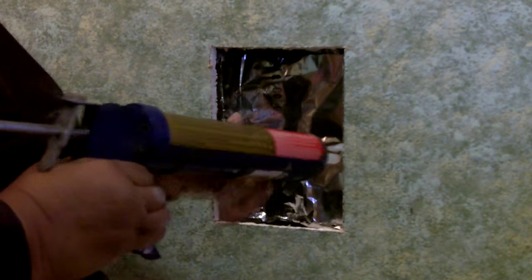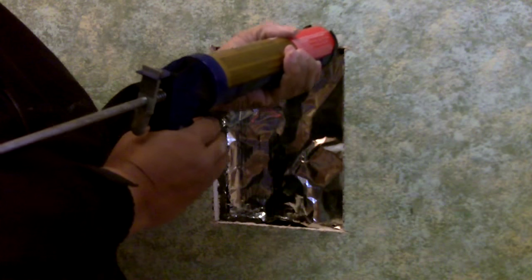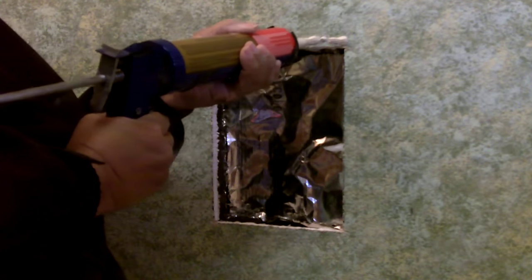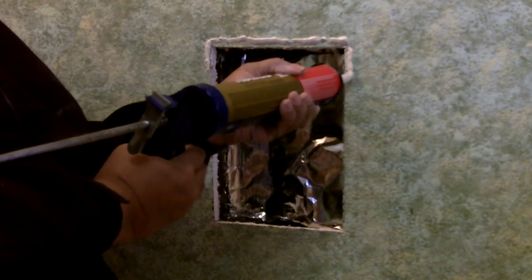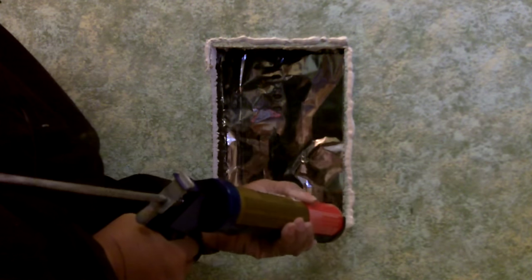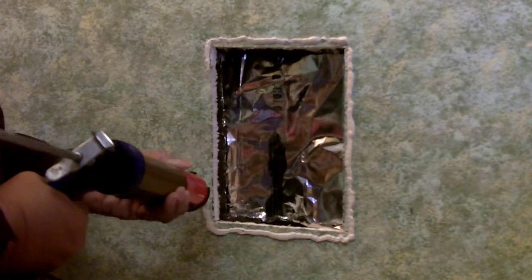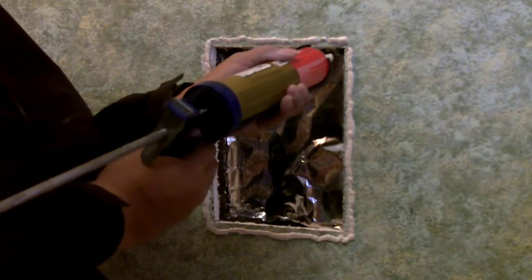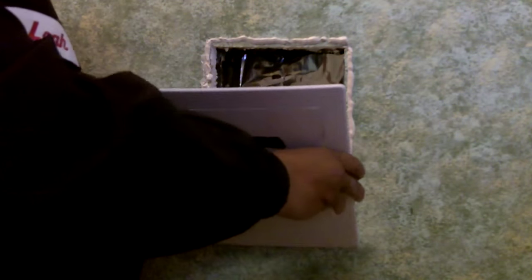I've got my caulking gun loaded with construction adhesive. Now I'm just going to go around the perimeter of the opening with the adhesive. All the way around the perimeter. And you want to use a nice generous amount. Don't be afraid to use a generous amount of construction adhesive. And it looks good. And now what we're going to do is we're just going to press our door into place here. I'm going to rest that on that side. There we go.